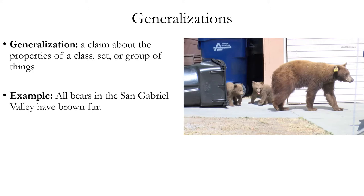For example, all bears in the San Gabriel Valley have brown fur. As this example shows, there is nothing inherently wrong with making a generalization. Much of our knowledge is built on generalizations. For example, all water molecules have one oxygen and two hydrogen. All mammals are vertebrates, etc.